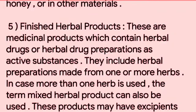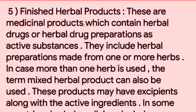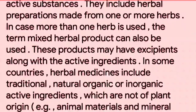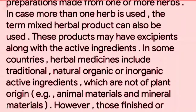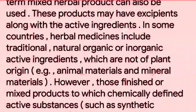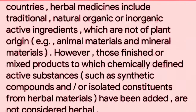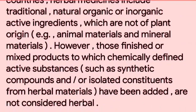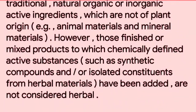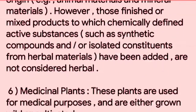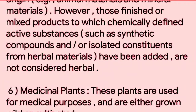5. Finished Herbal Products: These are medicinal products which contain herbal drugs or herbal drug preparations as active substances. They include herbal preparations made from one or more herbs. In case more than one herb is used, the term mixed herbal product can also be used. These products may have excipients along with the active ingredients. In some countries, herbal medicines include traditional, natural organic or inorganic active ingredients, which are not of plant origin, e.g., animal materials and mineral materials. However, those finished or mixed products to which chemically defined active substances, such as synthetic compounds and/or isolated constituents from herbal materials, have been added, are not considered herbal.